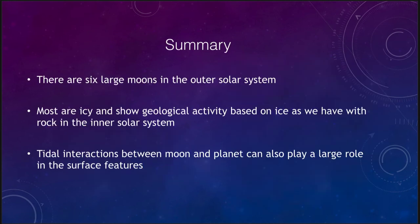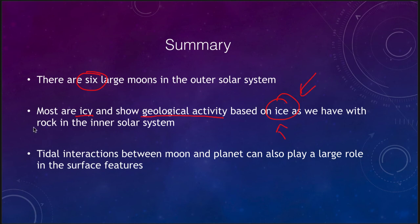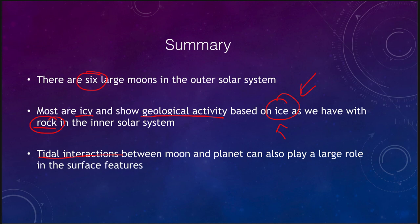Let's finish up with our summary. What we've covered in this lecture: there are six large moons in the outer solar system — four around Jupiter, one around Saturn, and one around Neptune. Most of these are icy and show geological activity based on ice, just as we have with rock in the inner solar system. Inner solar system volcanic activity is based on rocky materials; in the outer solar system it is based on ice. Tidal interactions between the moons and their planet play a large role in what surface features are visible and help heat up the moons. That concludes our lecture on the large moons of the outer solar system — we'll be back again next time for another topic in astronomy. Have a great day, everyone, and I will see you in class.